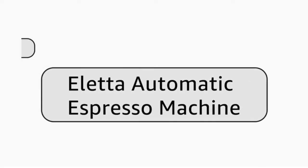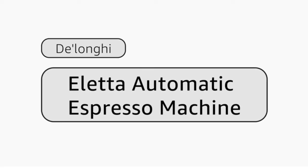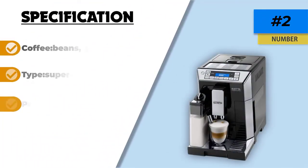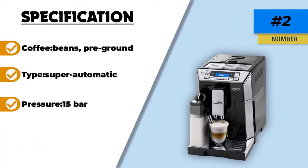Separate heating elements for milk and espresso ensure temperatures are right for the drink. Also, there is an extractable brew unit. The fact that you can detach it from the central unit makes it one of the easier ones to clean.